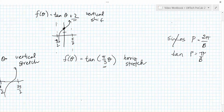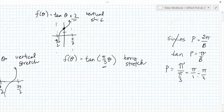In our example, the value of b affecting the period is π/3. So we calculate: π/1 divided by π/3, then multiply by the reciprocal to get π/1 × 3/π. The π's cancel and we're left with 3/1. So the period of our new tangent function is going to be 3.